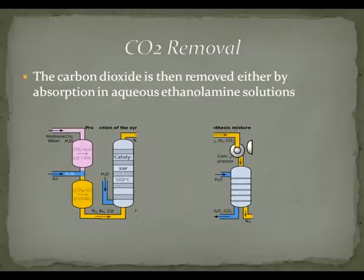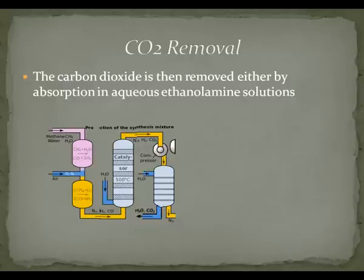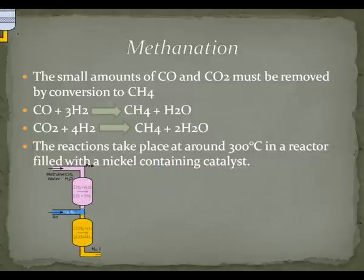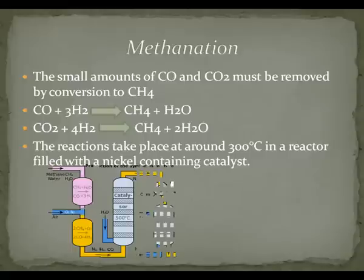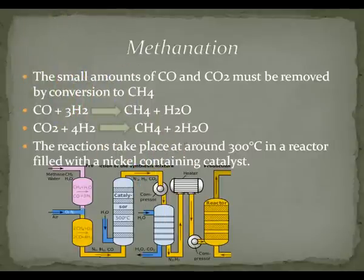CO2 removal: the carbon dioxide is then removed by absorption in aqueous ethanolamine solutions. As you can see in the diagram, the carbon dioxide and water are being removed from the process. The next process is methanation: there is still a small amount of carbon monoxide and carbon dioxide remaining, which need to be converted to methane. The reaction takes place at around 300 degrees Celsius in a reactor filled with iron-containing catalysts.